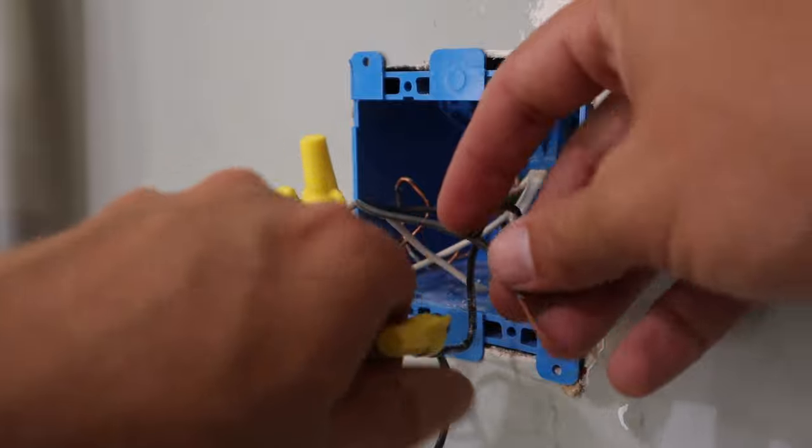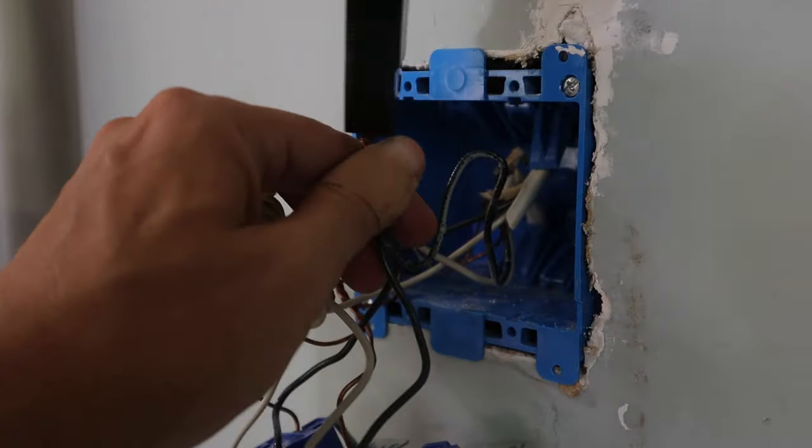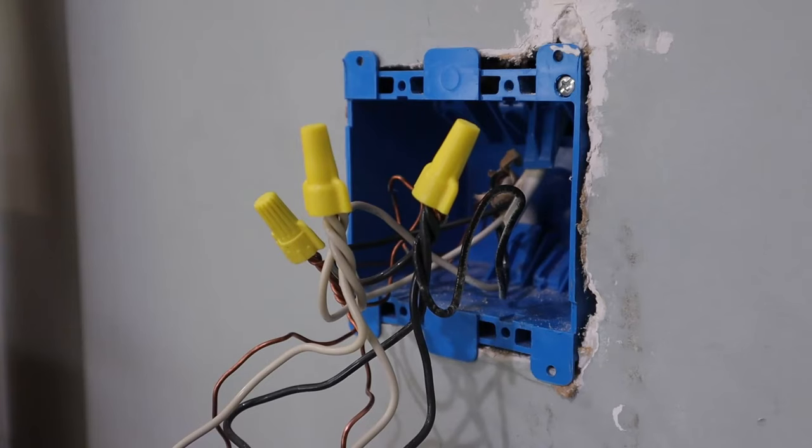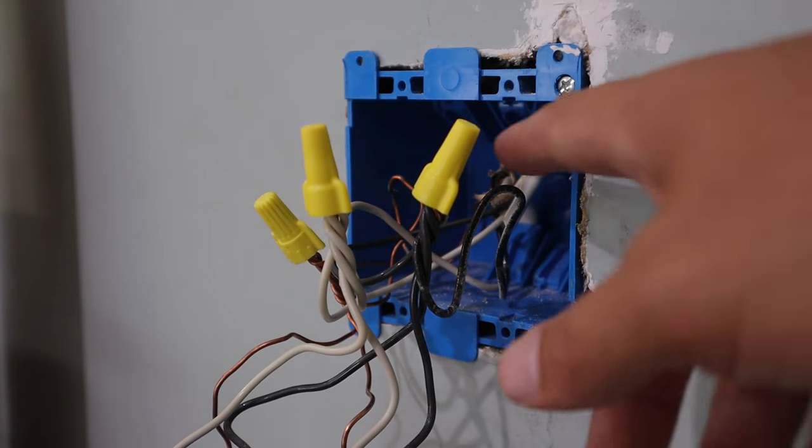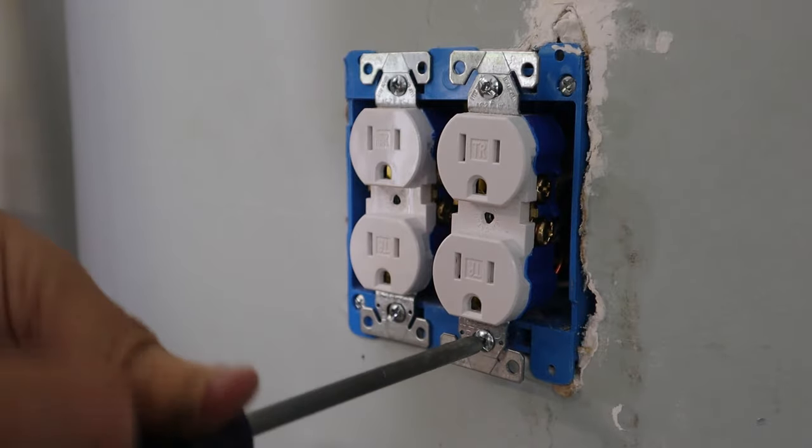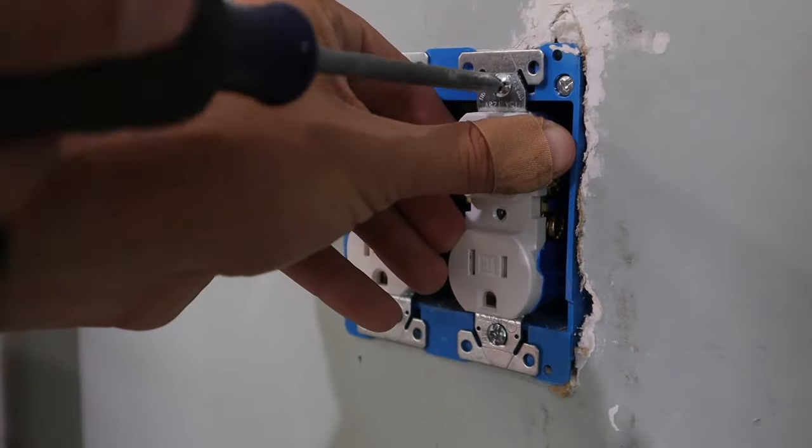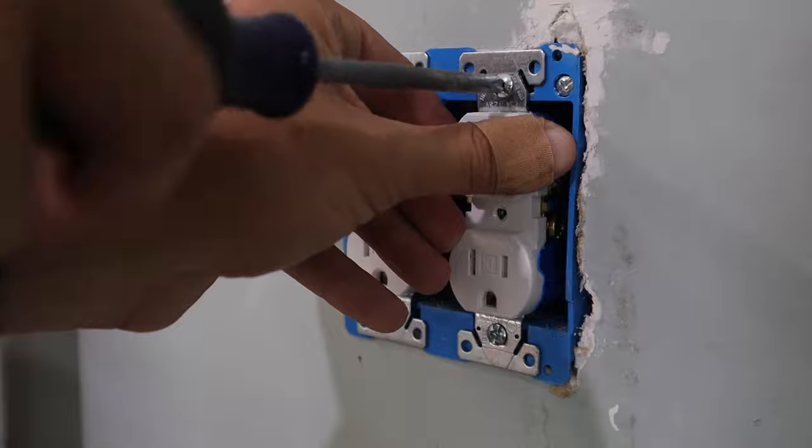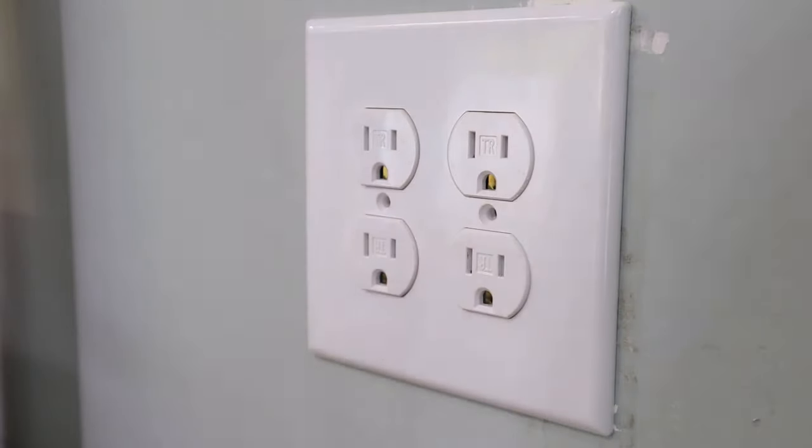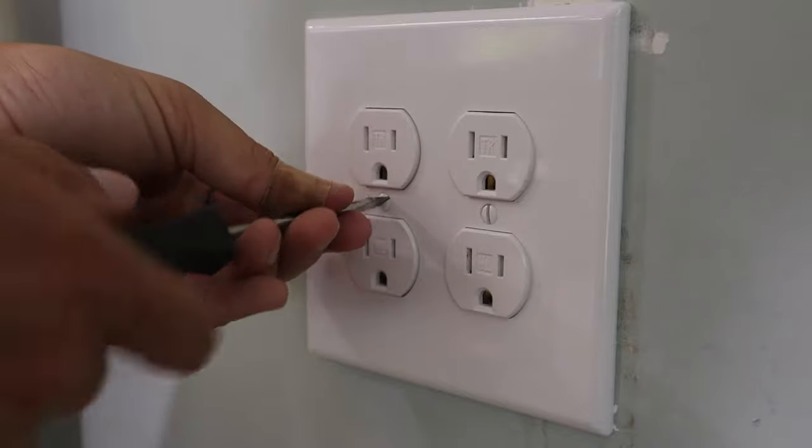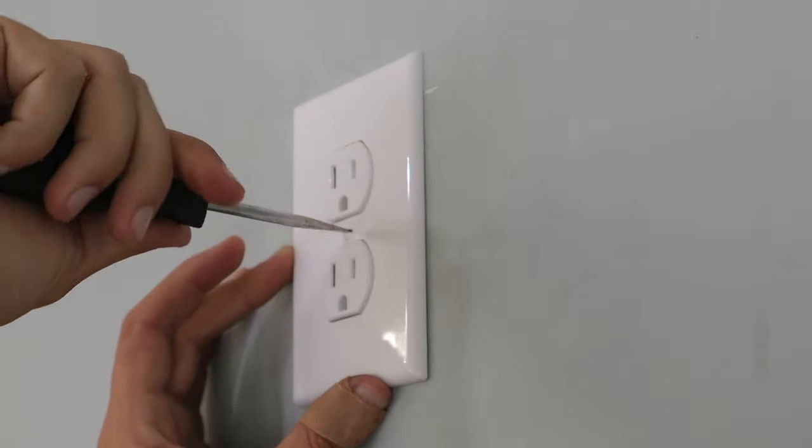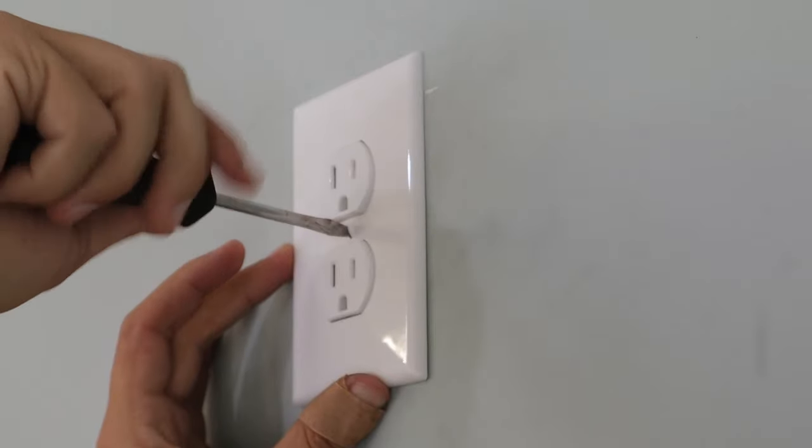And then last but not least, our black line wire. Once all the wires are connected, the outlets can be put back into the box. Now if this was just a single outlet, the process would still be the same. I would need to make up some pigtails for all the feed wires going to the outlet just like I have here, to where then all of the wires going to the outlet - the pigtails, the feed wire, and the feed wire going to the outlet being installed - would all be connected underneath one wire nut.